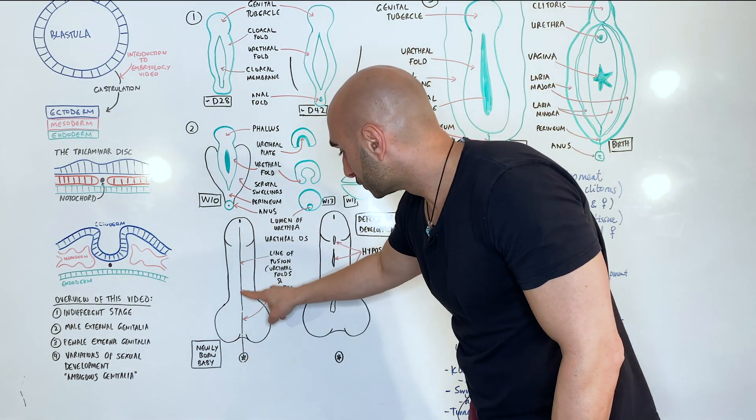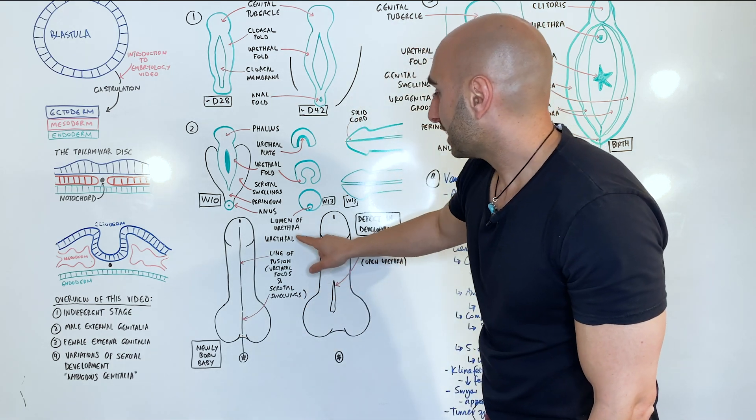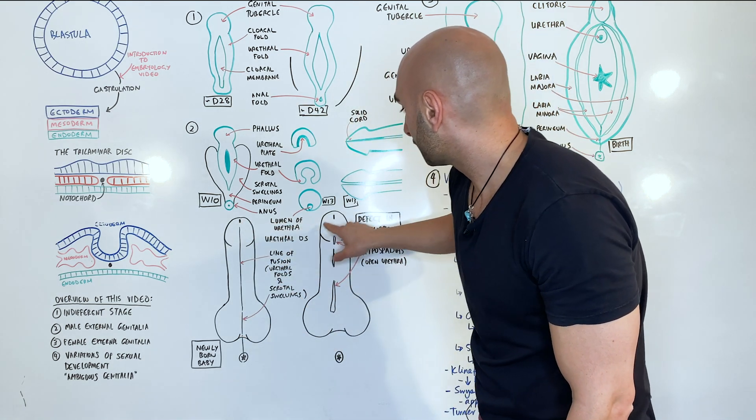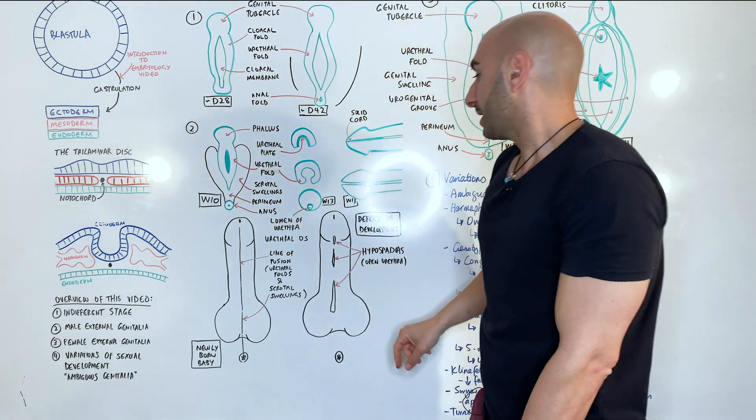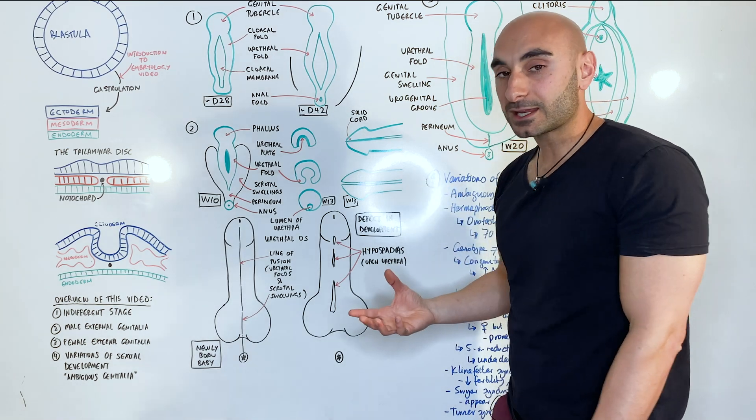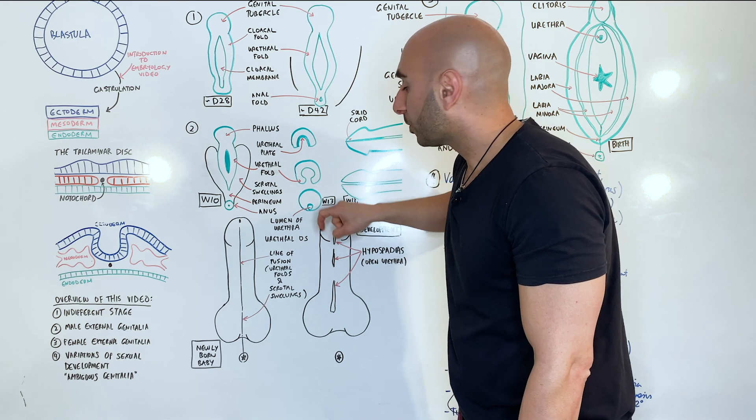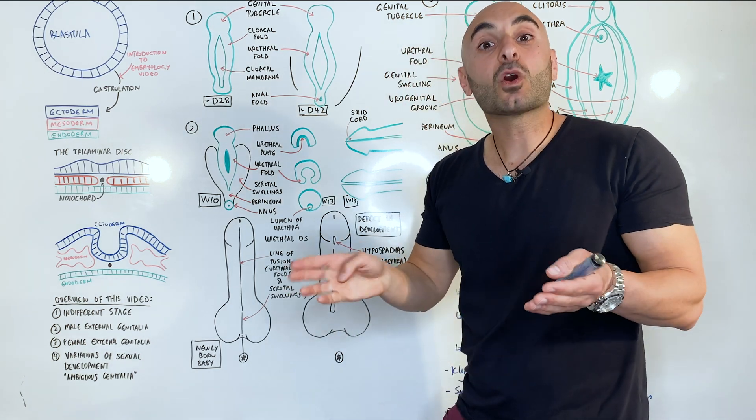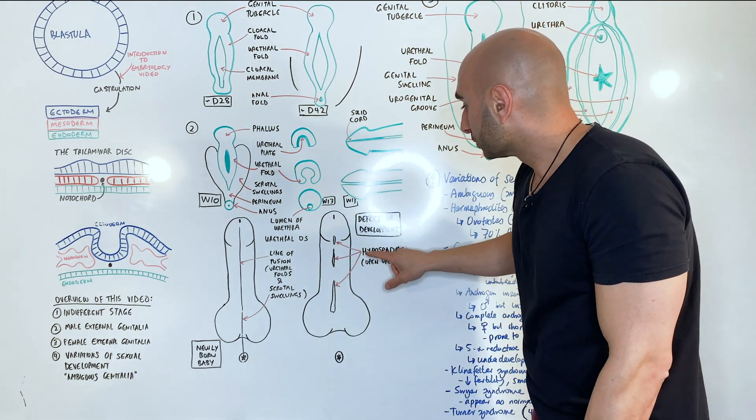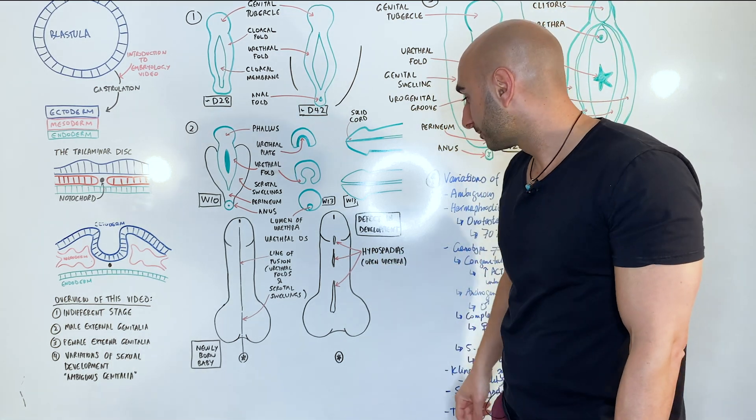So we have the line of fusion going through the middle, the scrotal swellings at the bottom, and here's the urethral os over there, the opening. And so let's talk really quickly about an abnormality in the development. In this case of the urethral fold not closing completely, not fusing properly, we will have a hypospadia, which is essentially an open urethra.